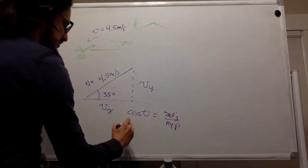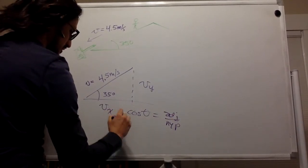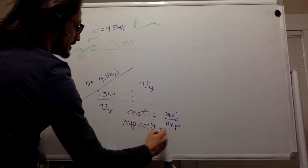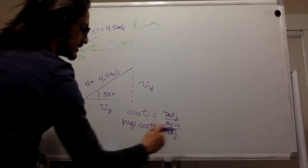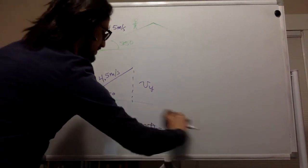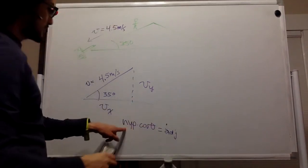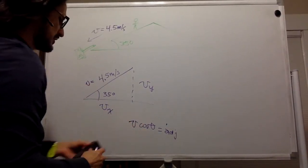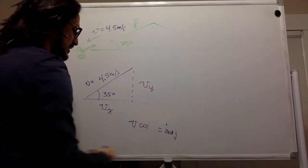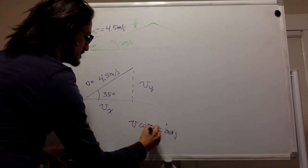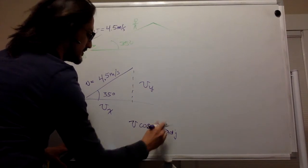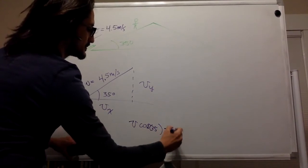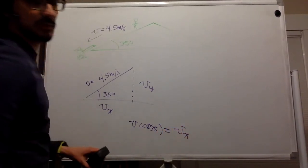So if we want the adjacent we just multiply hypotenuse times cosine theta. The hypotenuse is the velocity and theta is 35 degrees and the adjacent is the x component of the velocity.